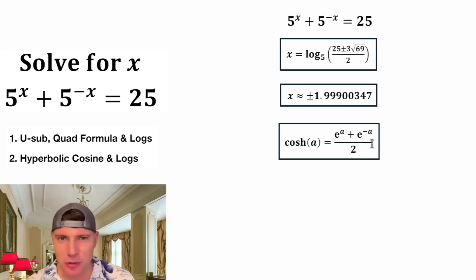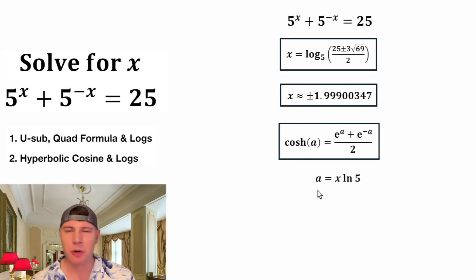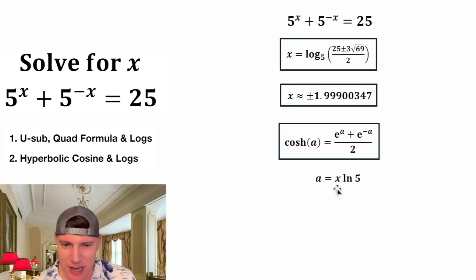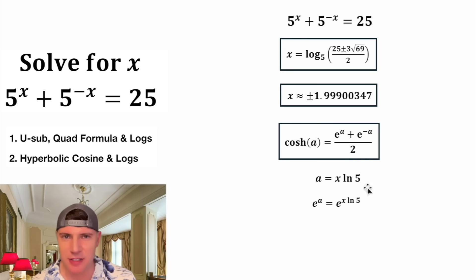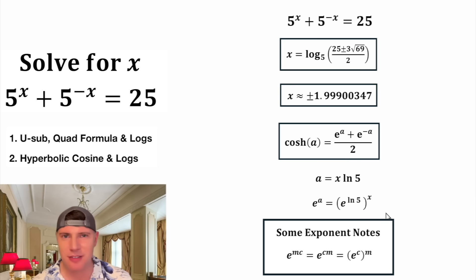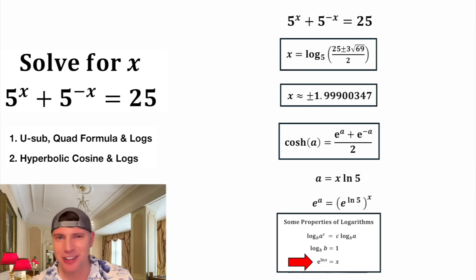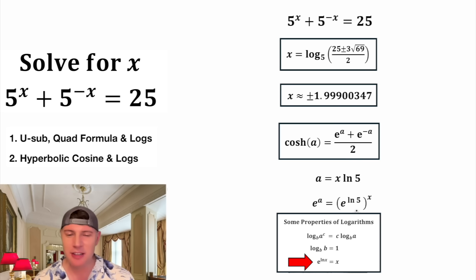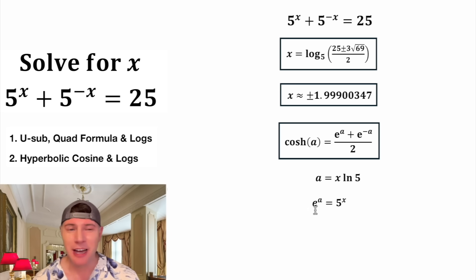First, we've got to get the a's in terms of x. Let's do an a substitution: let a equal x times the natural log of 5. From here we can give both terms a base of e, so e to the a equals e to the power of x natural log of 5. Using exponent rules, we can rewrite this as e to the power of natural log of 5 to the power of x. And since e to the natural log of x is just x, e to the natural log of 5 is just 5. So e to the power of a is equal to 5 to the power of x.